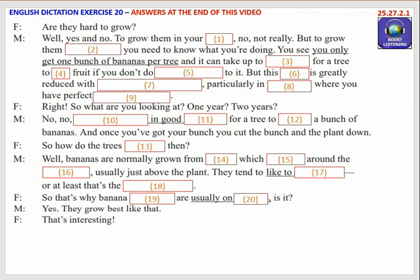So how do the trees reproduce then? Well, bananas are normally grown from suckers, which spring up around the parent plant, usually just above the plant. They tend to like to grow uphill, or at least that's the common wisdom. So that's why banana plantations are usually on hillsides, is it? Yeah. They grow best like that. That's interesting.